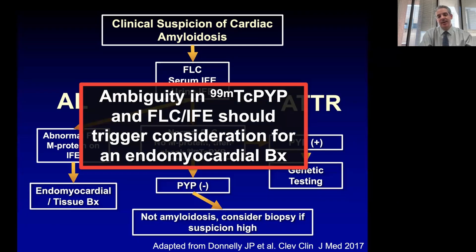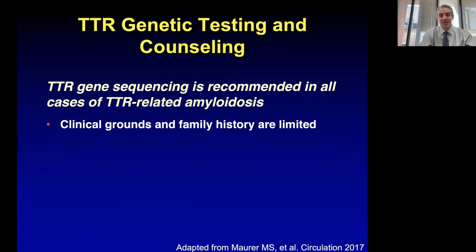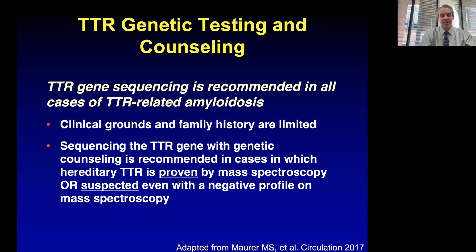A key point: if there is ambiguity in any of this testing, it should always trigger consideration for an endomyocardial biopsy. Regarding genetic testing: TTR gene sequencing is recommended in all cases of TTR-related amyloidosis. Clinical grounds and family history are limited — most people don't have recall, may be unaware of family members' diagnoses, or there can be ascertainment bias. Even when we biopsy, mass spectrometry can sometimes indicate evidence of an abnormal TTR variant, but this must always be confirmed with TTR gene sequencing.